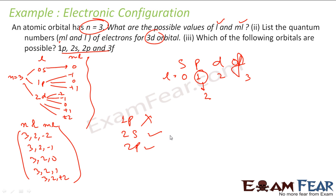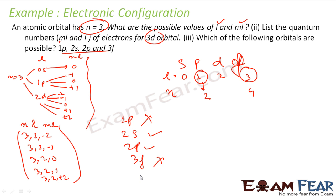Is 3F possible? For F, L is equal to 3, so the minimum value of n is L plus 1, which is 4. So 4F is possible, but 3F is not possible.